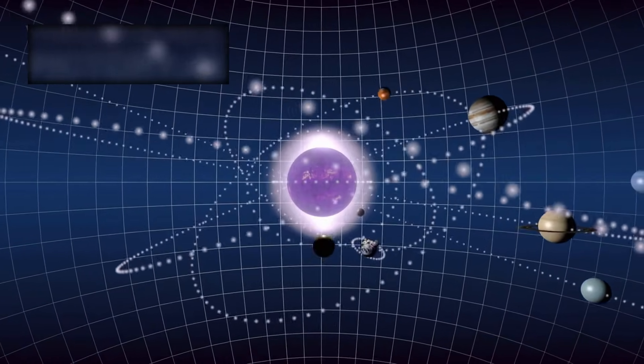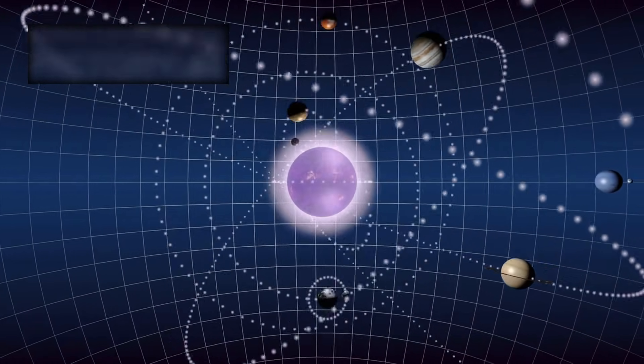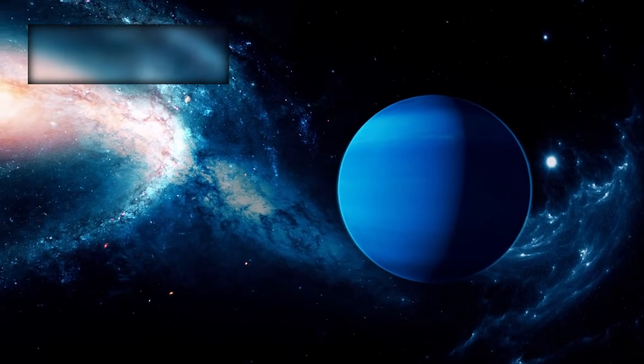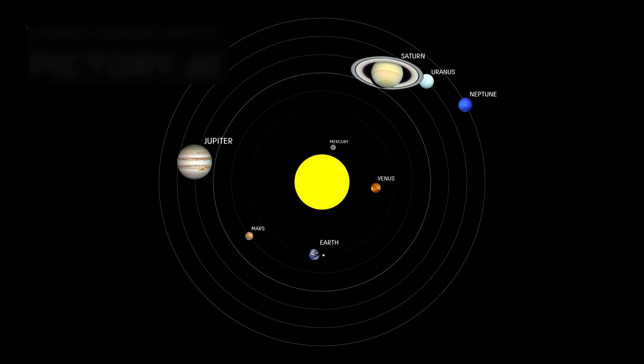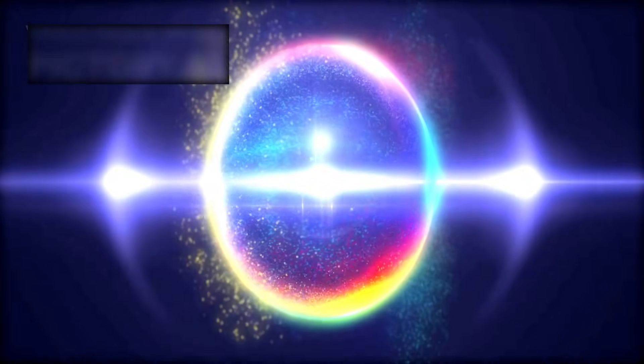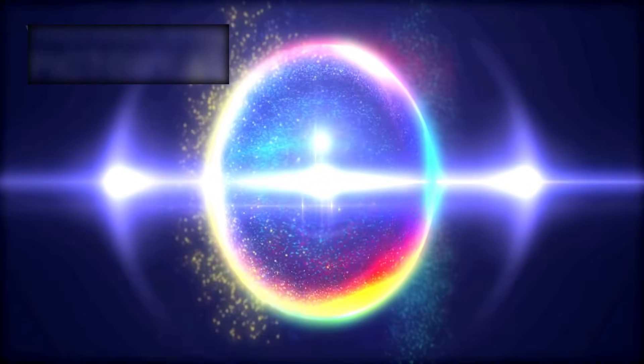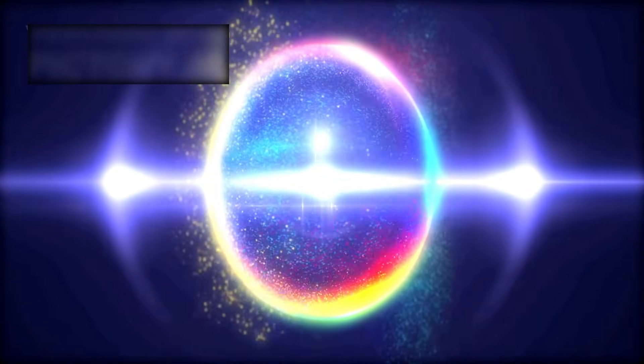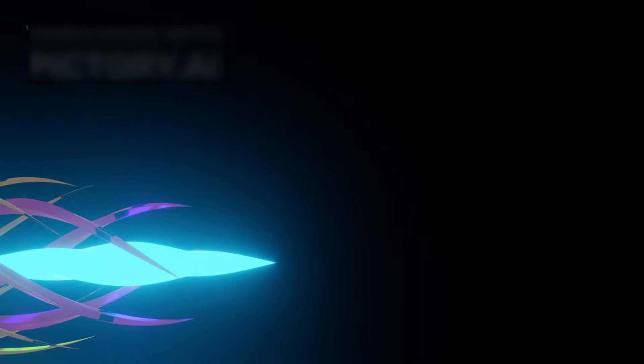K218b belongs to a category of exoplanets known as sub-Neptunes, larger than Earth, yet smaller than Neptune. A class of planet that doesn't exist anywhere in our solar system. This alone makes it an enigma. It defies our familiar templates—Earth, Mars, Jupiter, or Saturn, none can serve as a reference. Sub-Neptunes are in-between worlds. Not fully rocky. Not fully gaseous. Something entirely different. And with that difference comes mystery, and immense potential.